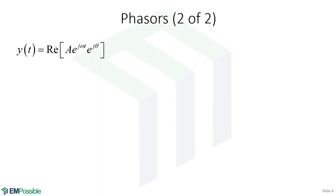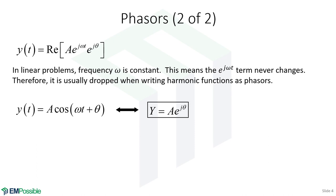When we are employing phasors, we are almost always analyzing things that are linear — and in this class, everything we'll analyze is linear. Frequency never changes in a linear system, so I don't need to carry e^(jωt) through my calculations because I know ahead of time it's always just going to be e to the j·omega·t. When we write phasors, we get lazy and don't bother writing e^(jωt), and we also don't write the real operation on the outside — both are just implied.